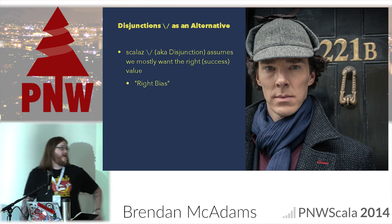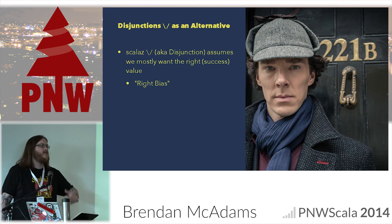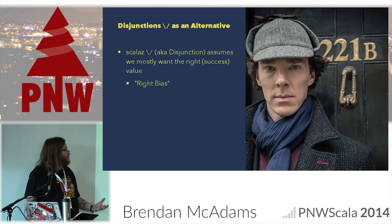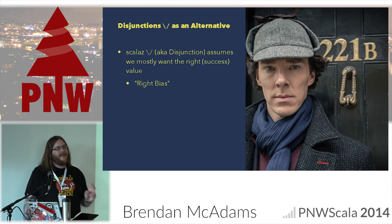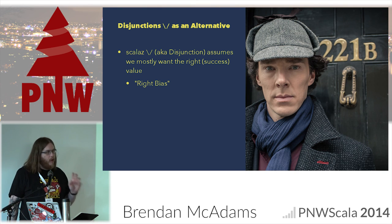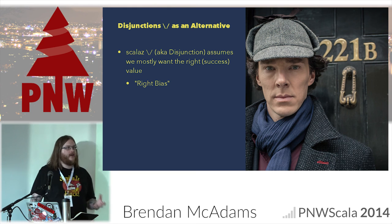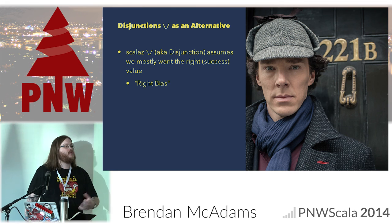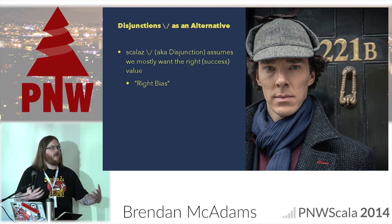Disjunction looks a lot like Either — it's either.scala, and follows some of the same ideas. But it assumes that we want the right side, the success, most of the time. It has a right-hand bias. So if we treat it like a monad, it's going to assume you're looking for the right side and therefore let us progress in that way.